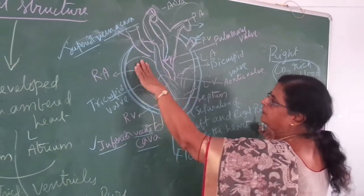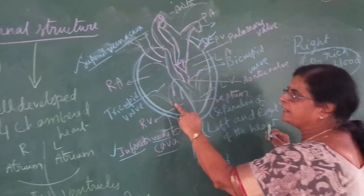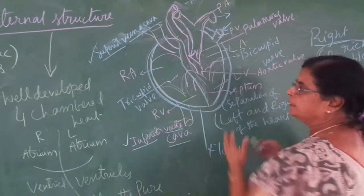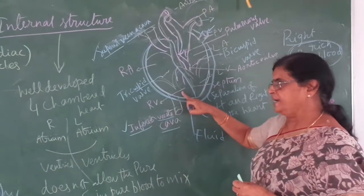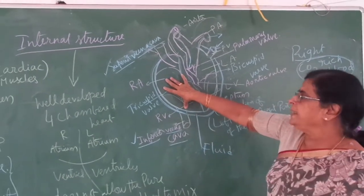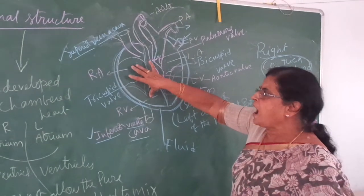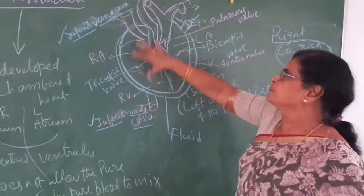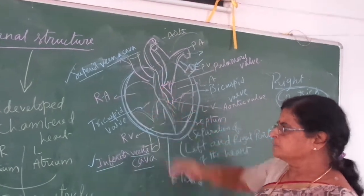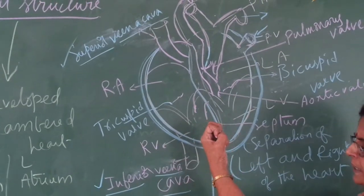From the right atrium, blood flows into the right ventricle. Once blood comes inside, it does not go back. When the atrium contracts, the blood goes into the right ventricle. This is deoxygenated blood — carbon dioxide-rich, impure blood — and it must be purified. Gaseous exchange takes place in the lungs. So when the ventricles contract, the blood moves through the pulmonary artery to the lungs.